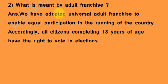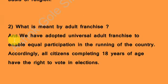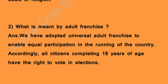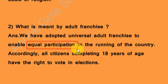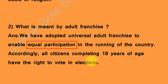Question number two: What is meant by adult franchise? The answer is: we have adopted universal adult franchise to enable equal participation in the running of the country. We all have equal participation or the right of equal participation in the government. Accordingly, all citizens completing 18 years of age have the right to vote in elections.